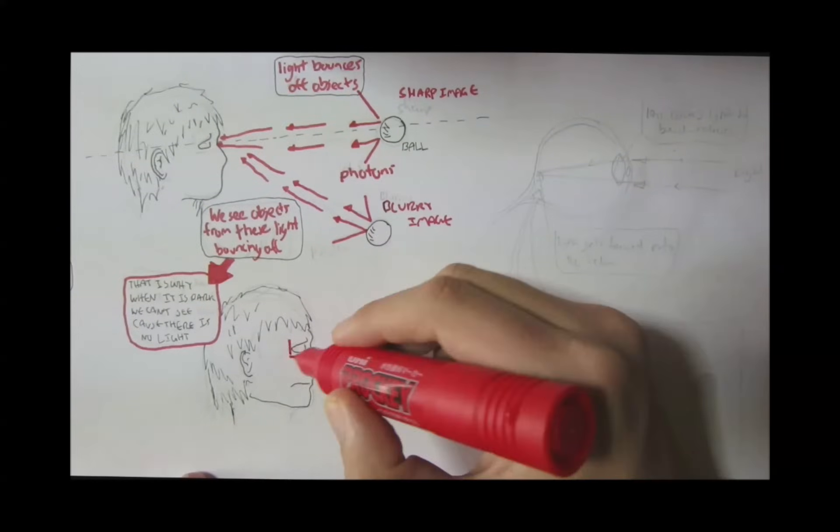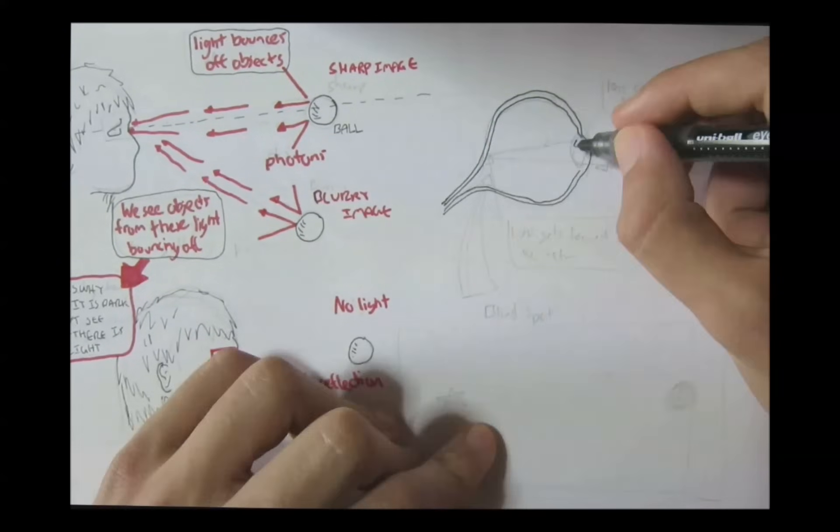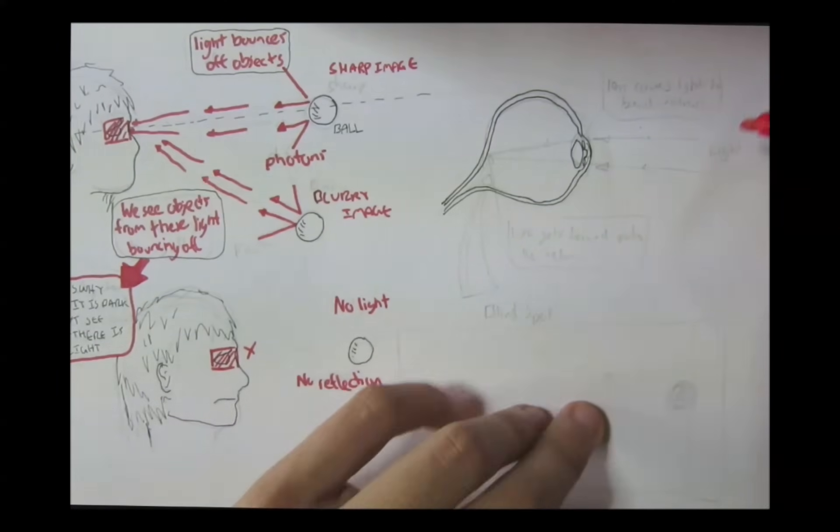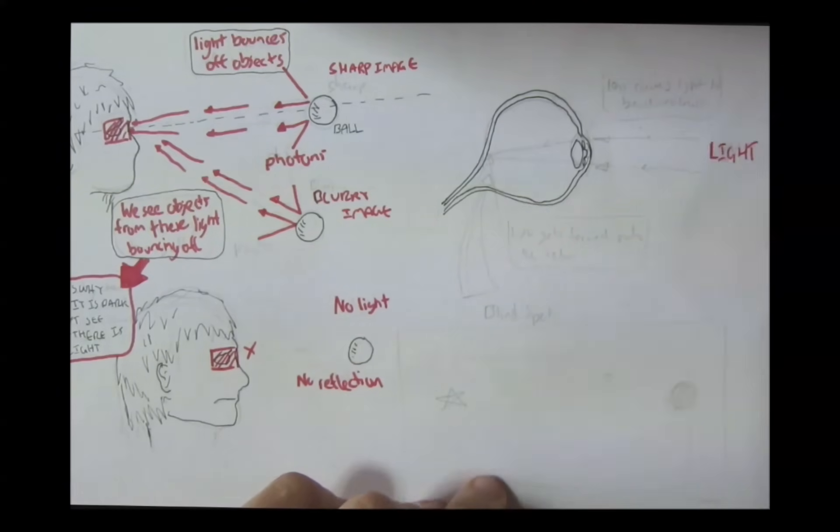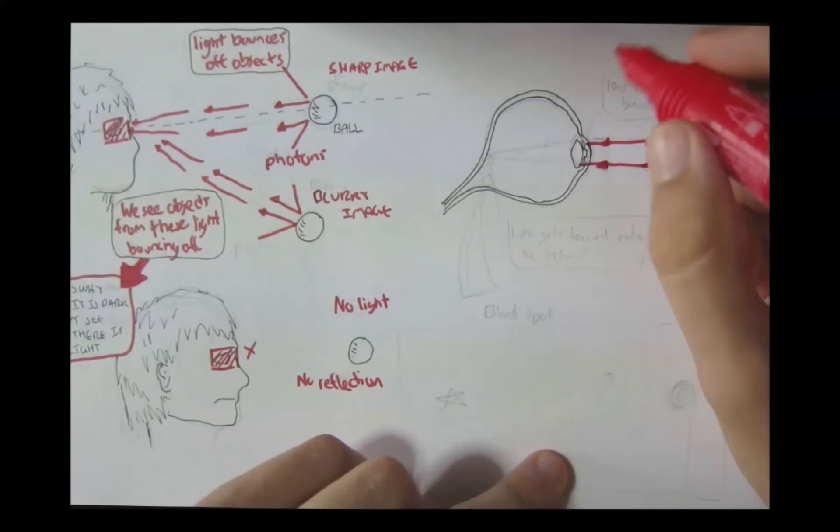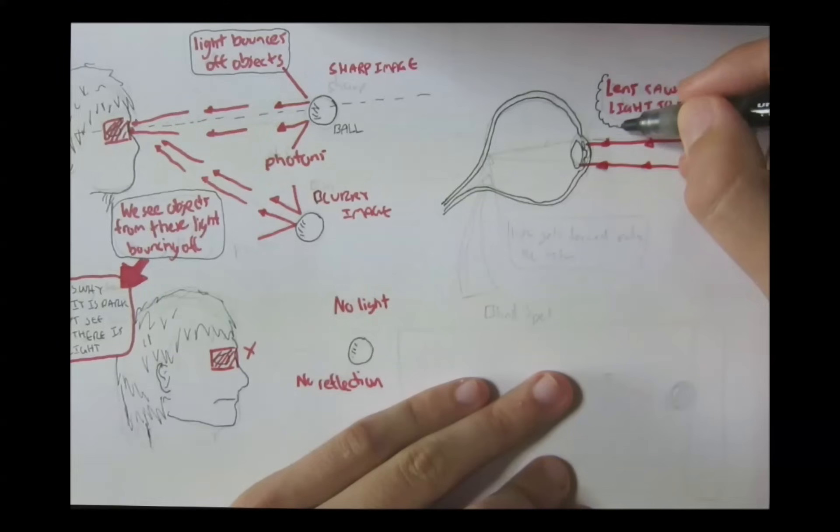So, let's have a closer look at how we see by zooming into the eye. Actually, make it this eye because this other guy is in the dark. So, here is the eye. Light, as I mentioned, bounces off something and travels to the eyeball. Light doesn't just go through at some random angle, but refracts to the back of the retina. So, it bends.